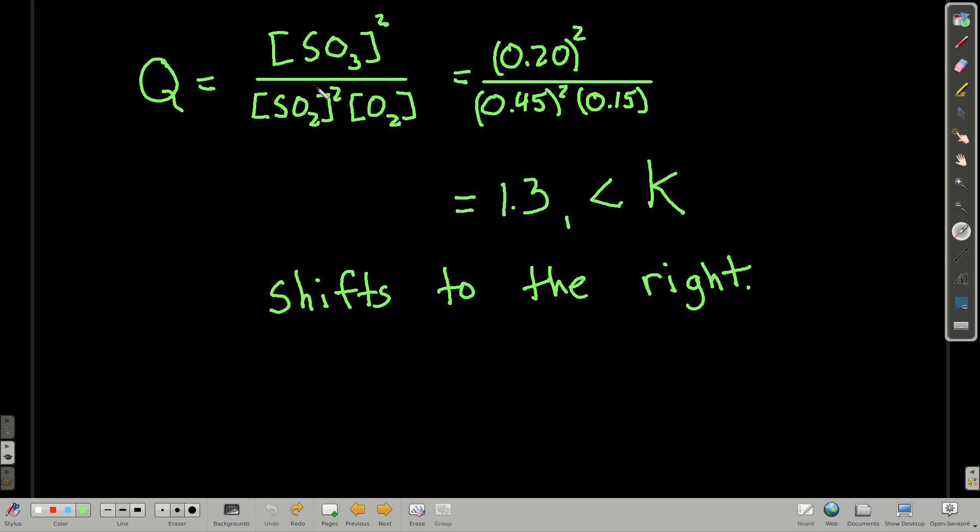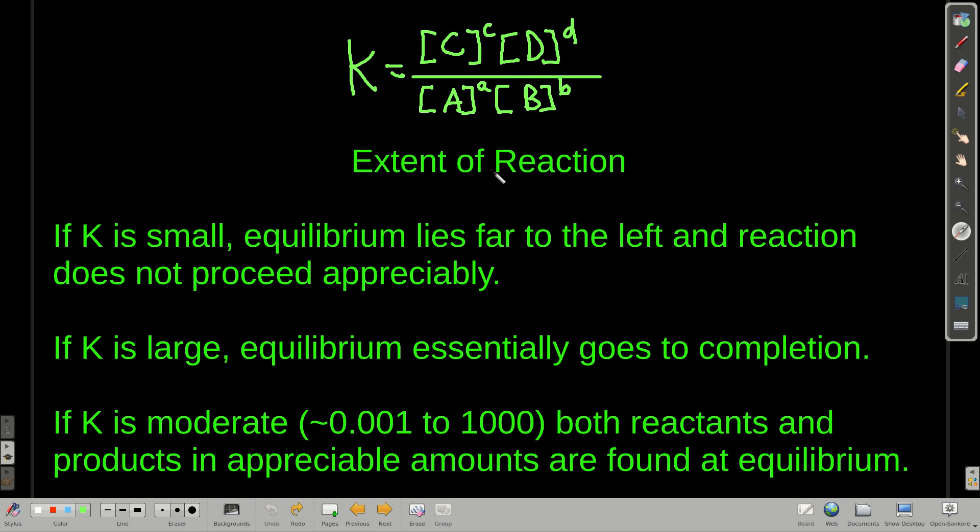If we plug in, there's the expression for Q. We write it just like K. Again, the only difference is that these are not necessarily at equilibrium. Plug in our values for concentration of sulfur trioxide, sulfur dioxide, and oxygen, and when you plug those numbers in, I believe it's 1.3 or so. K was 13, so this is 10 times smaller than K, which means our equilibrium will shift to the right.